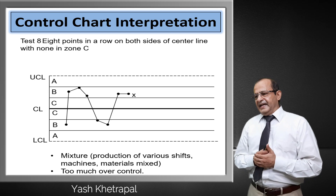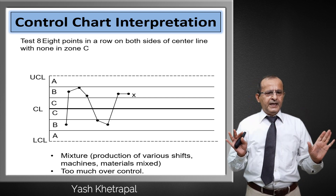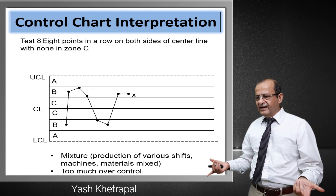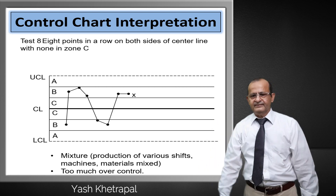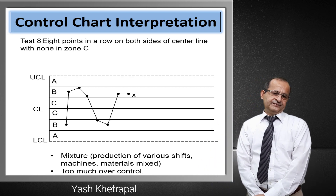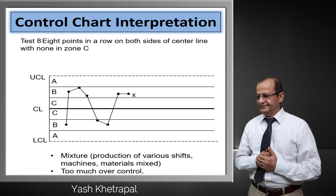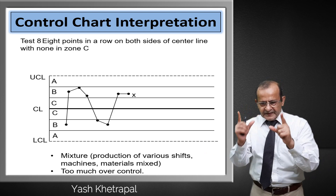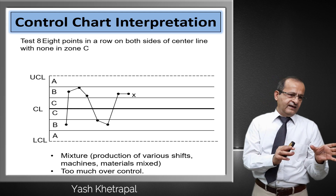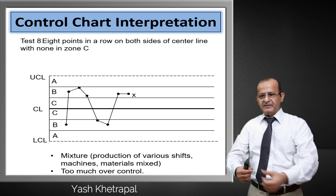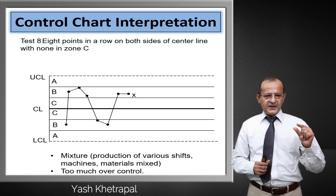Rule 8: 8 points in a row with none in Zone C. In Zone C we have nothing. The reasons include mixture — the output has been mixed, which is a violation of the control chart process. When we capture data, consecutive pieces should be measured carefully. If 2 or 3 machines' data have been mixed together, that is not acceptable. Or there is too much over-control — the operator and machine are continuously adjusting.